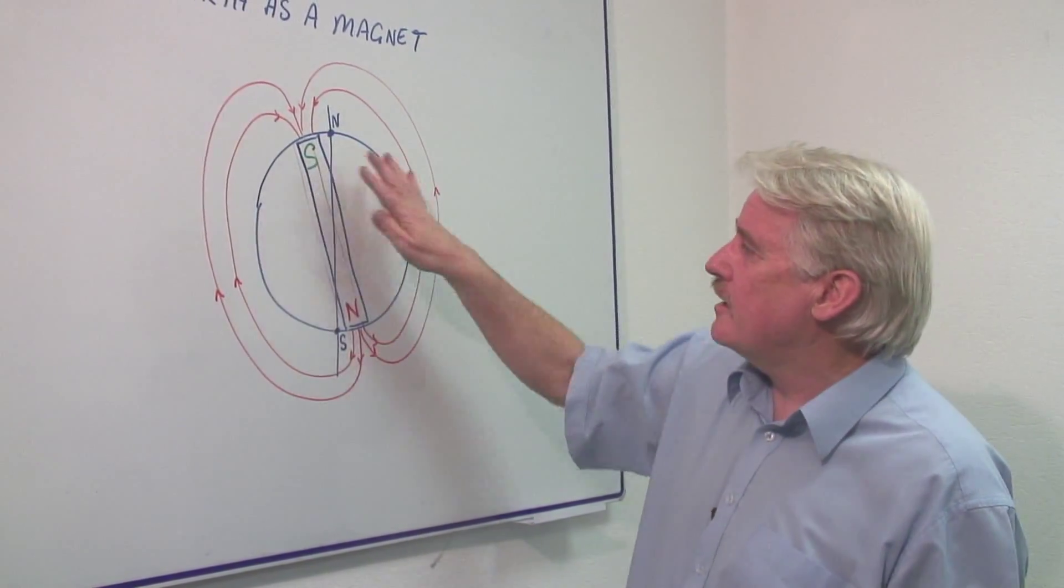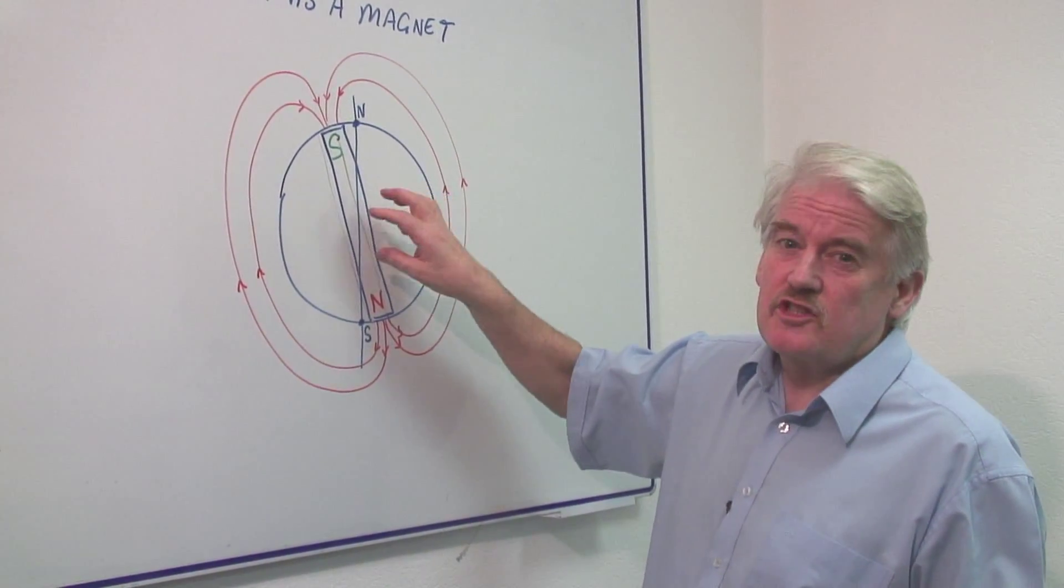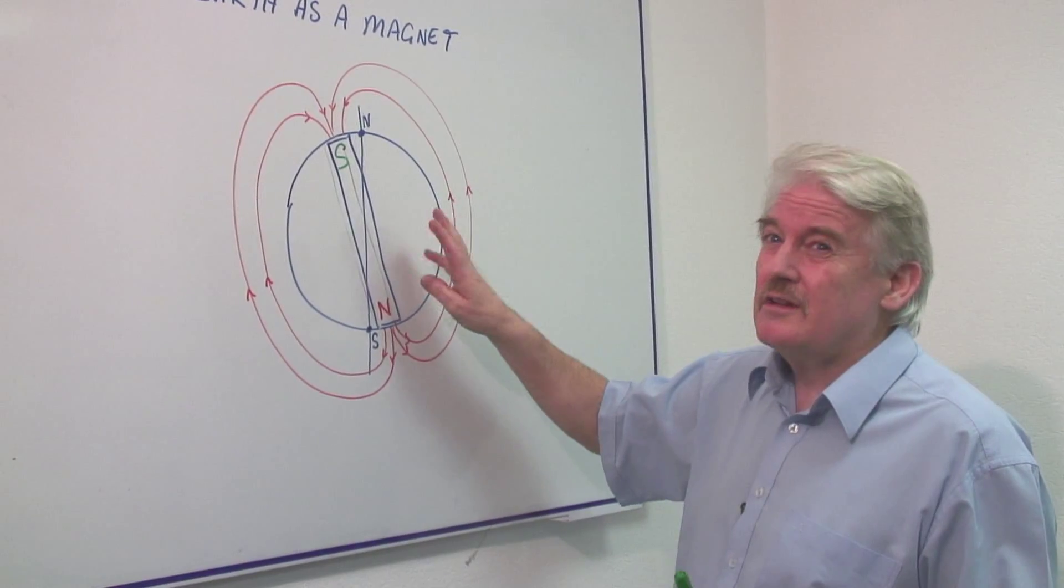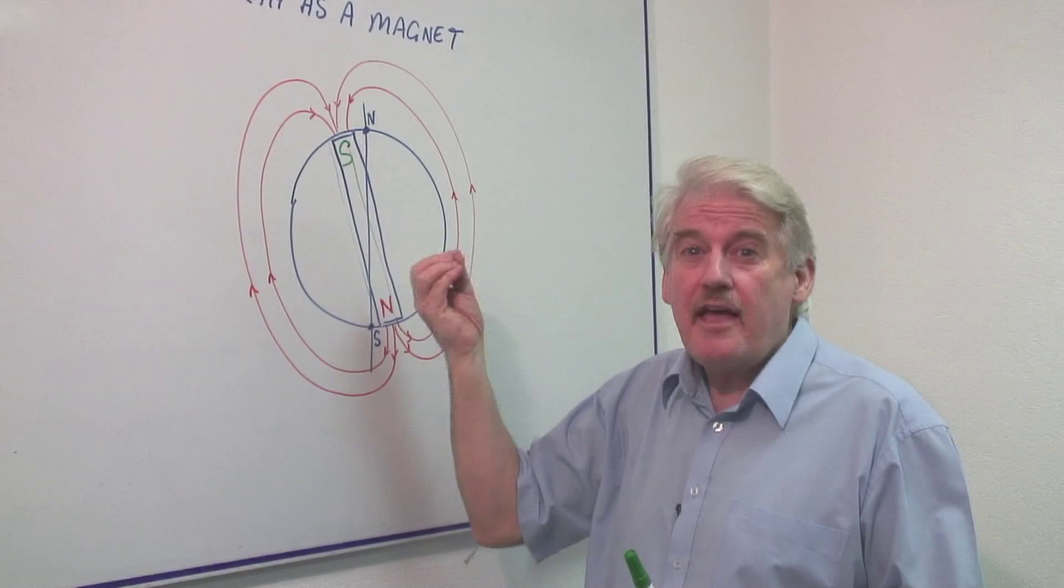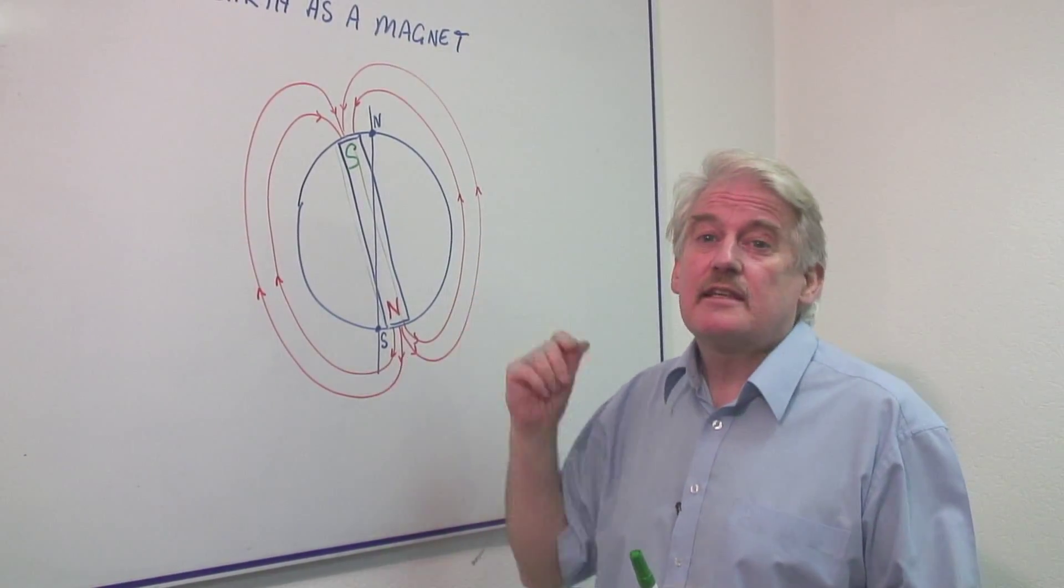The earth contains several layers but the centre of the earth is the core. The core is molten iron material and it seems to be from there that the earth creates its magnetism.